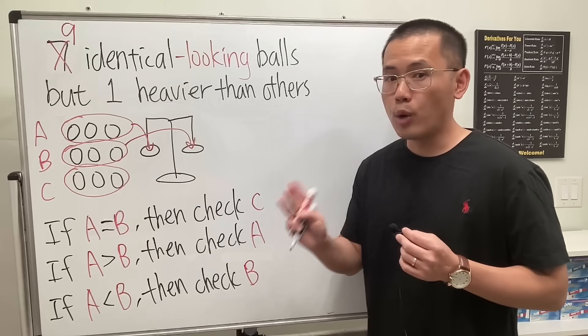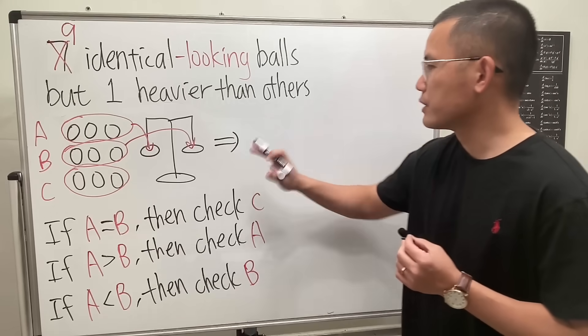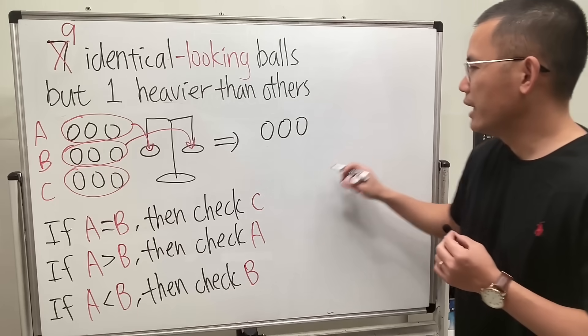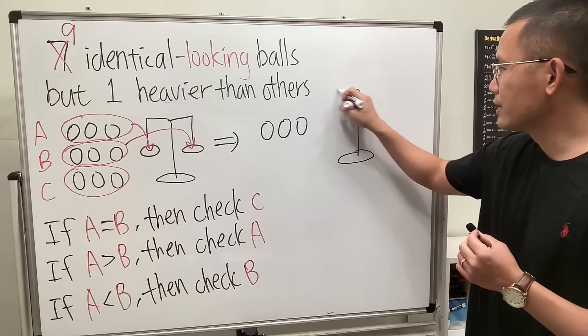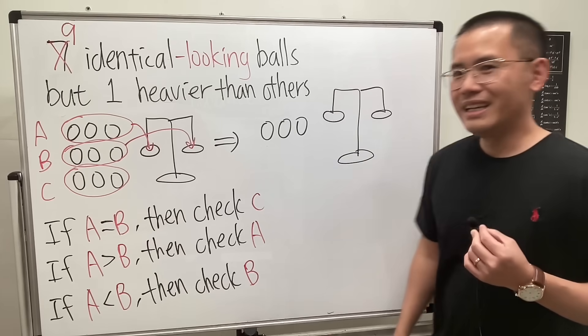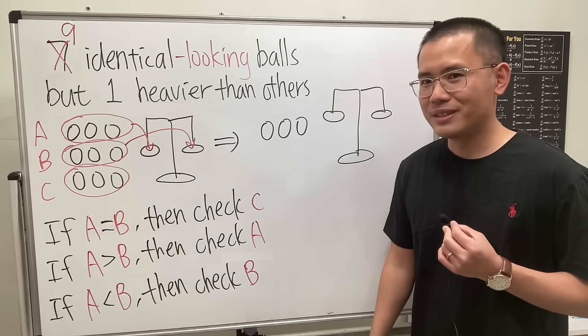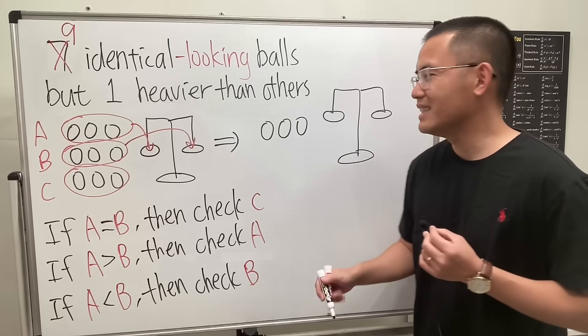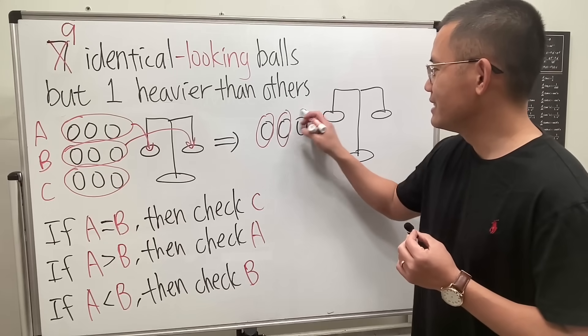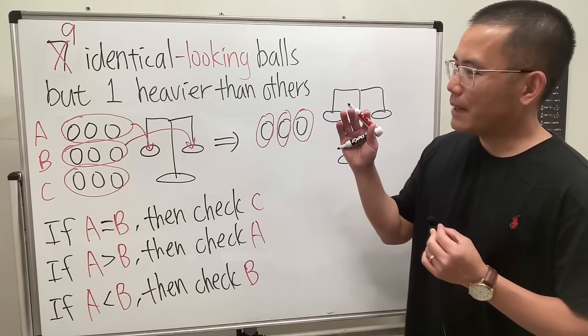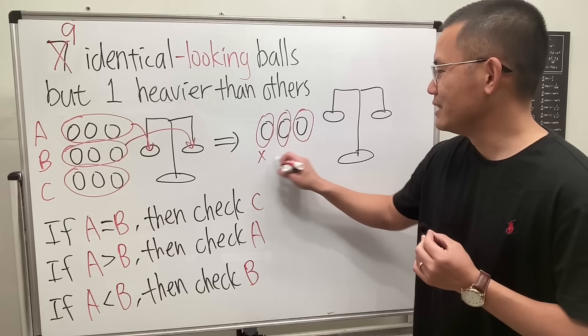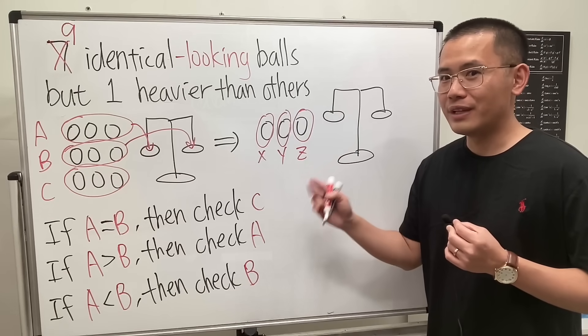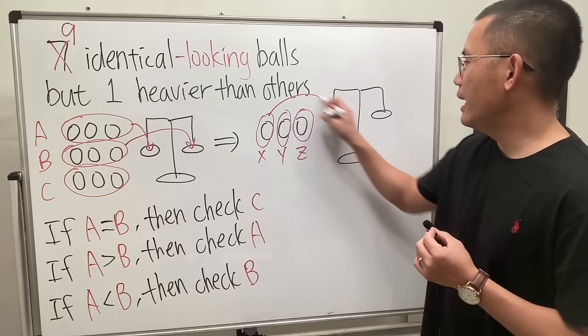So just three balls - one, two, three - and here again we have the scale. How are we going to do it? Three balls, we divide them into three groups of one, and I use capital A, B, C already, so let me label these x, y, z. Then I'm going to pick any two of them and use the scale - let's pick x and y. In fact, the same thing.